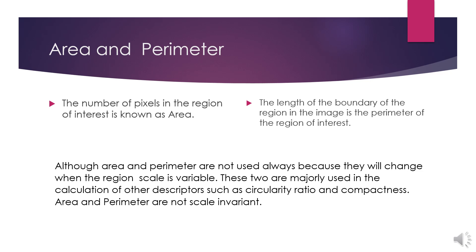Number of pixels in the region of interest is known as area. The length of the boundary of the region in the image is the perimeter. Although area and perimeter are not always used because they will change when the region scale is variable. These two are majorly used in the calculation of other descriptors such as circularity ratio and compactness. Area and perimeter are not scale invariant.